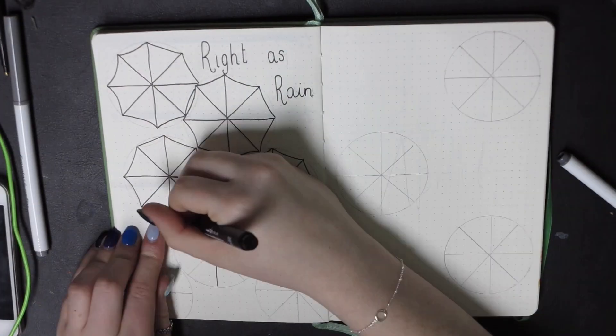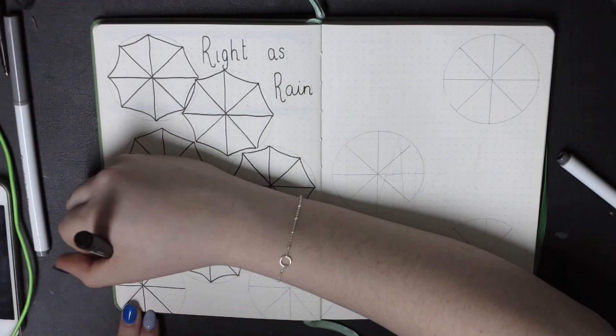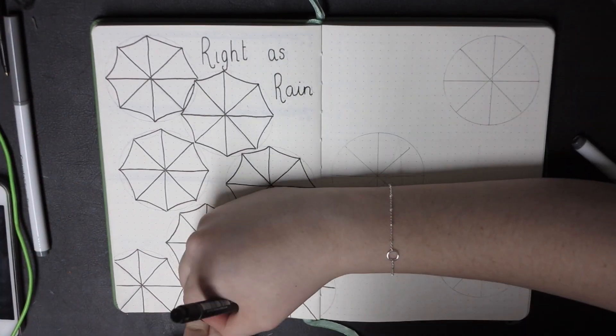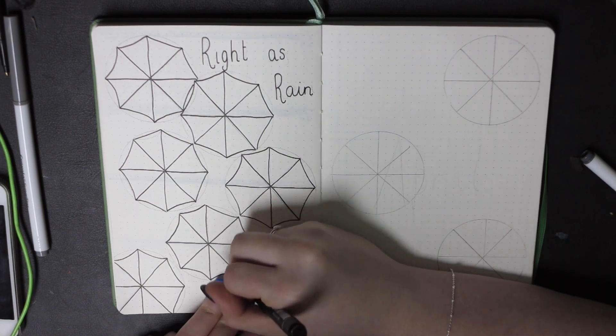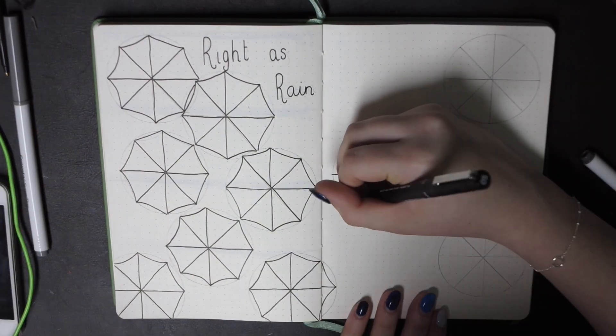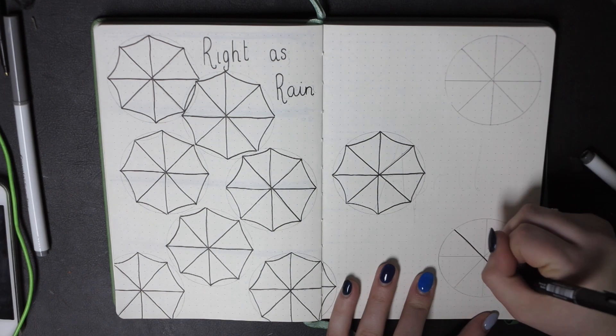I'm just going to speed this up a little bit because you're probably bored of me drawing umbrellas by now. I did this on the second page as well, like a double page spread, and then I wrote April next to the umbrella in the middle.